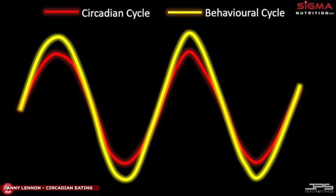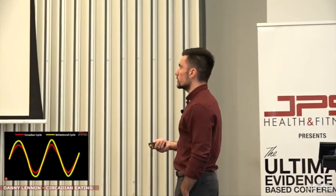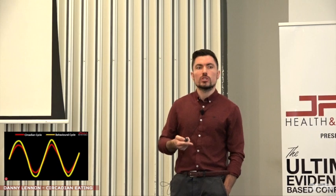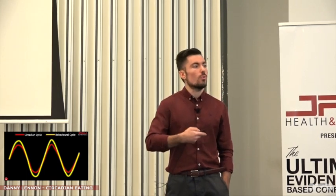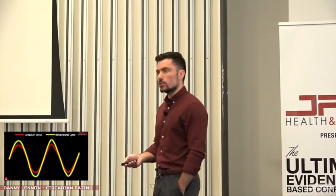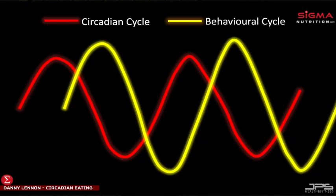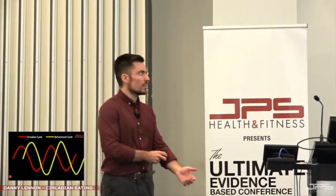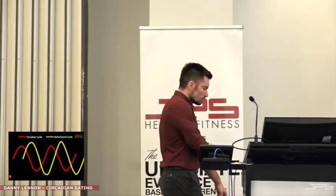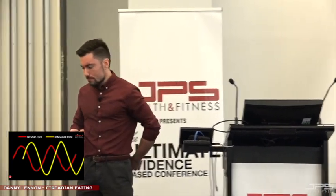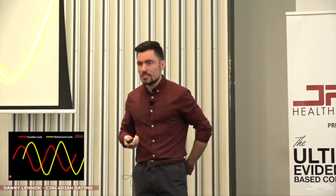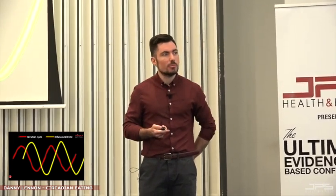Another form of misalignment occurs when we have certain behaviors that cause a shift putting our behavioral cycle out of sync with our endogenous circadian cycle. We have behavioral cycles like light exposure, dark exposure, sleep, and wake — and we want to line those up properly. Certain behaviors can shift some of these processes, putting our behavioral cycle out of sync with the circadian cycle we'd ideally want, and that's what we're going to get into today.